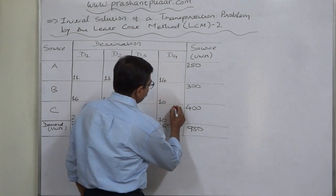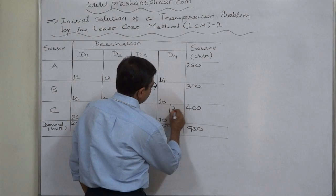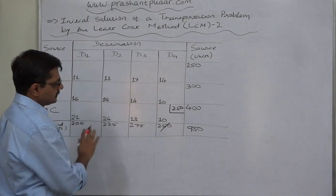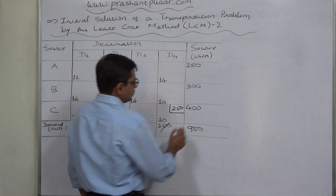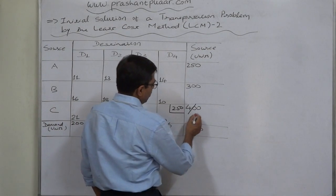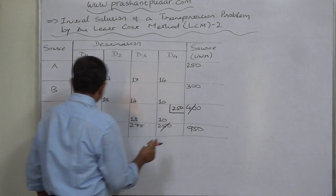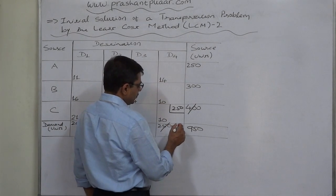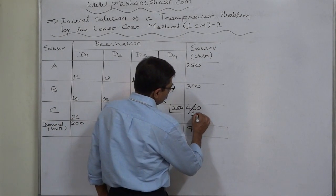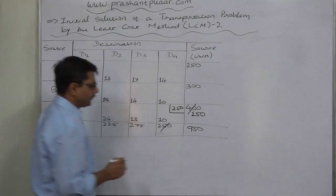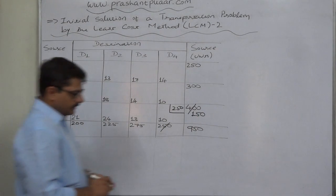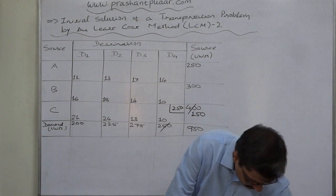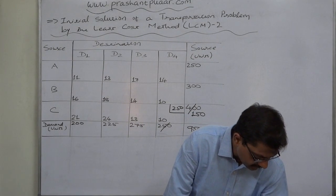Let us make an allocation of 250 units to that cell. The demand of D4 is now fully satisfied. Out of 400 units of supply available from source C, we have allocated 250, so the remaining balance of supply is 150 units. We need to cancel column D4.